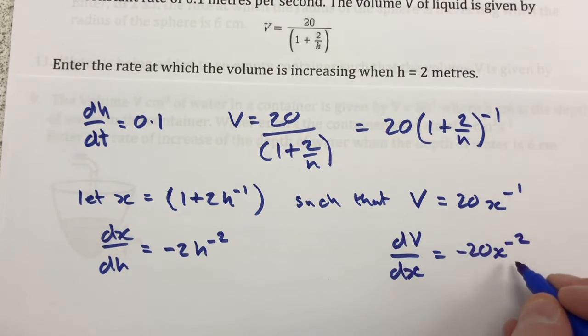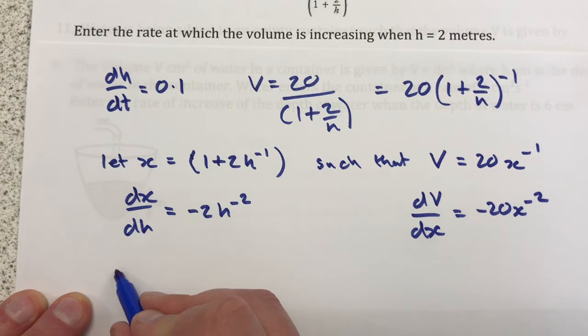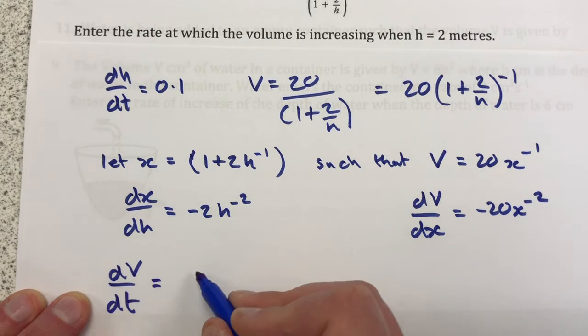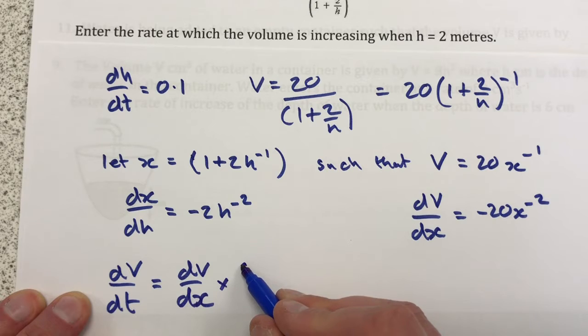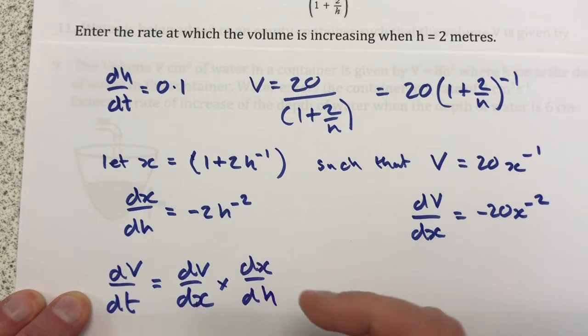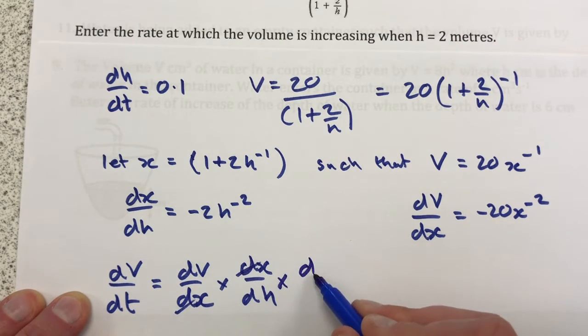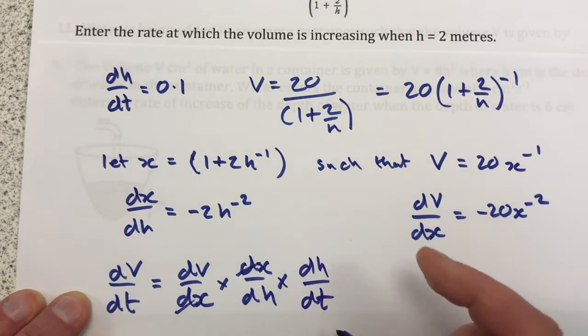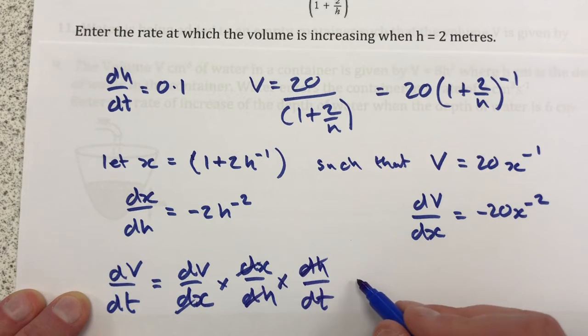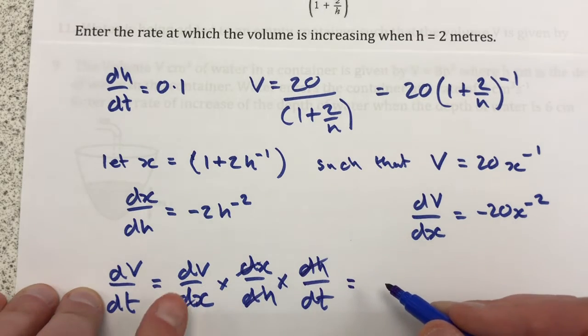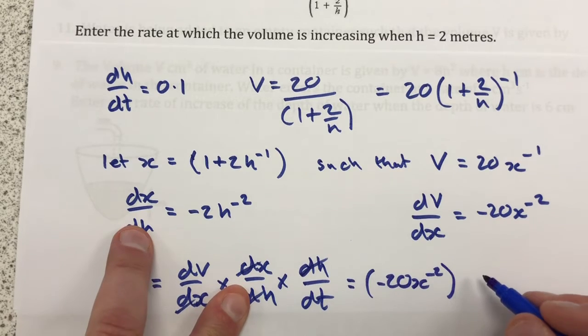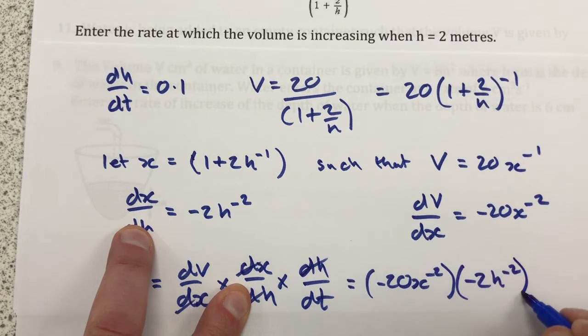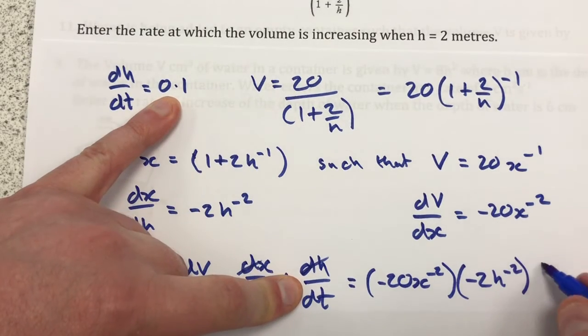And then what we're looking for is dV/dt, which we can get from dV/dx, which is over here, times by dx/dh, which is over here, for the purposes of canceling out the dx, times by dh/dt, which is up here, for the purposes of canceling out the dh. So that's going to give us dV/dx, minus 20x to the minus 2, times dx/dh, minus 2h to the minus 2, times dh/dt, 0.1.